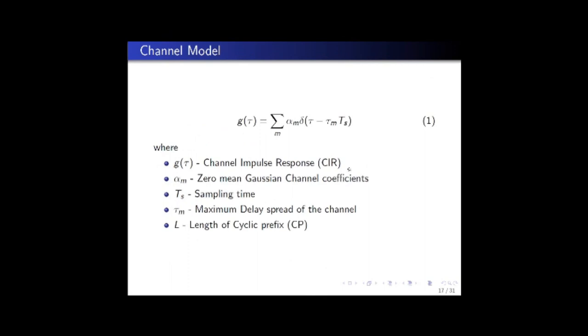Talking about channel model, an additive white Gaussian channel or AWGN channel is a memoryless channel and it has just one impulse at zero. But all wireless channels are not AWGN channels, because of which a channel impulse response can be thought of as a train of impulses as shown in equation one.